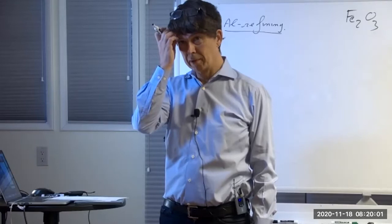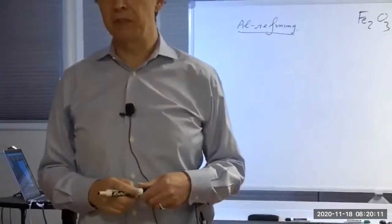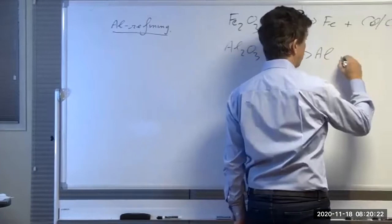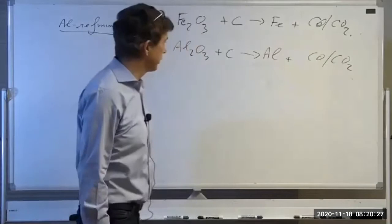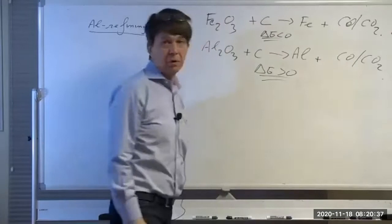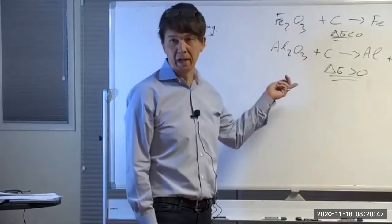Aluminum is a more electropositive element. The ΔG of oxidation for aluminum is lower than that of carbon. So if you wrote Al₂O₃ plus carbon trying to go to Al plus CO or CO₂, the ΔG is positive at practically all temperatures, whereas for iron reduction the ΔG is negative. This is one of the main reasons iron is cheaper than aluminum — and contrary to what you might think, aluminum is actually the more abundant element in the Earth's crust.